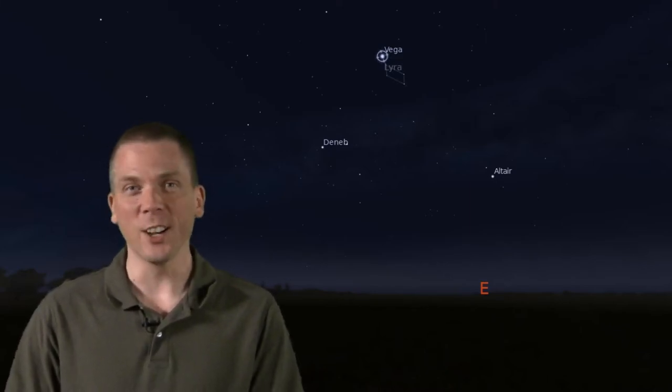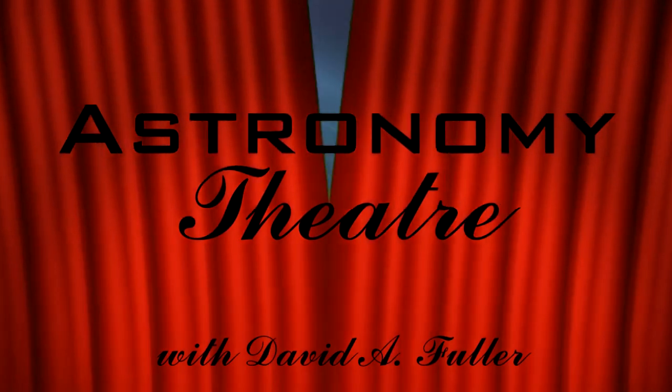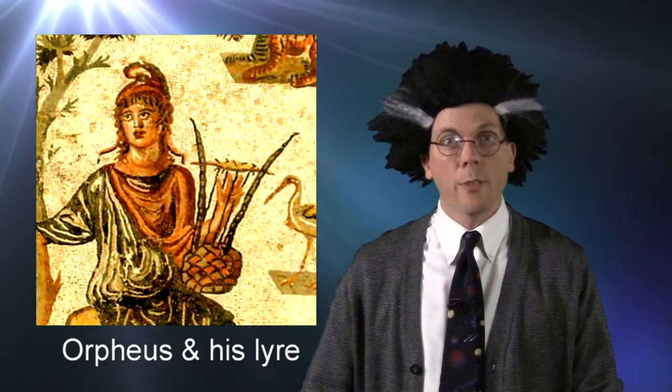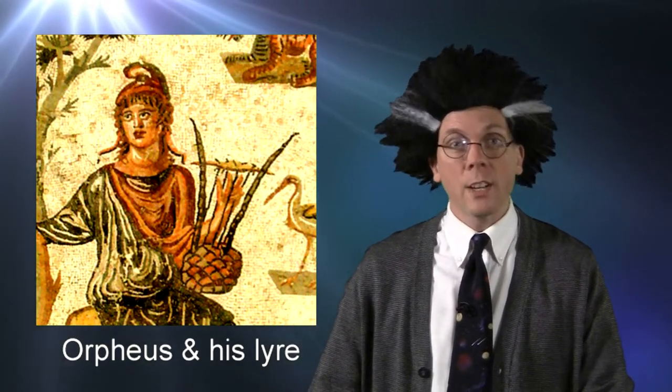But first, a short detour into astronomy theatre. Lyra represents the musical instrument of Orpheus from Greek mythology. And there are many musical and artistic references to this figure. Have you ever been to an Orpheum theatre? Named for him!